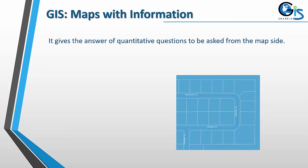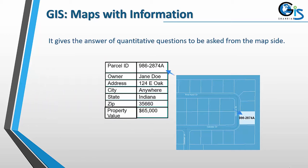By the help of GIS we can get many answers to quantitative questions — such as the plot number, owner name, address, city, state, zip, and property value. Any type of quantitative question can be answered from GIS because GIS contains maps with a database. This data provides us information, and from that information we get answers to quantitative questions. Not only that, GIS also helps us to join and relate one database with another database.